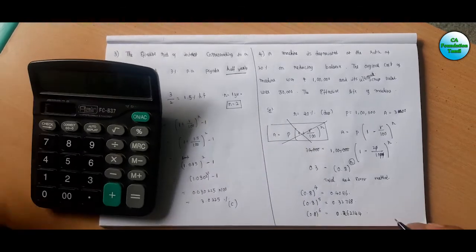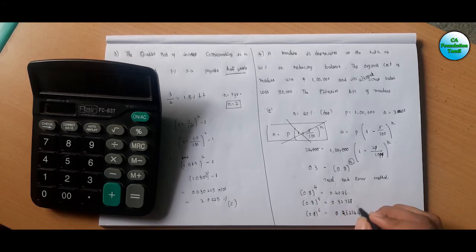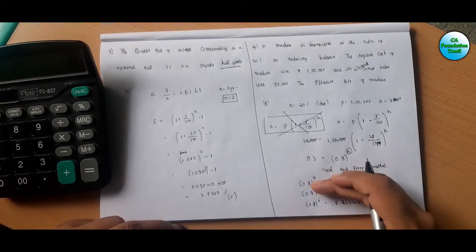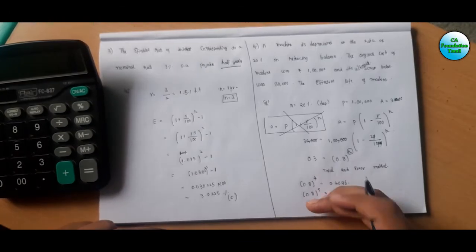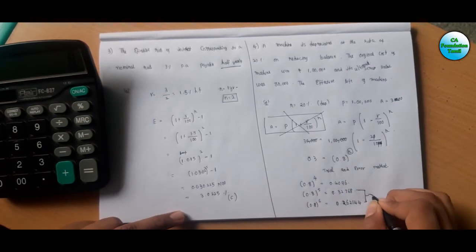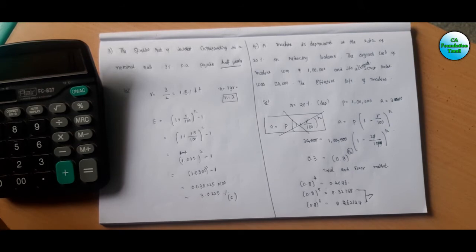So 0.3 lies between 0.32768 (n=5) and 0.262144 (n=6). Therefore the value of n is between 5 and 6. Since it is closer, approximately n equals 5.1 or 4.5 — the effective life is approximately 5 years.